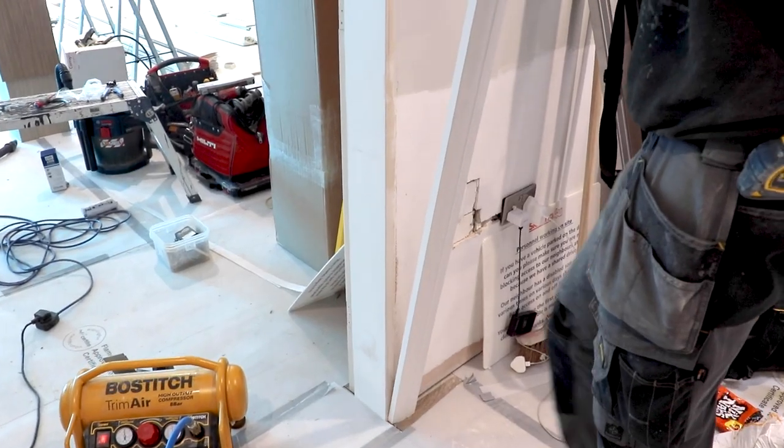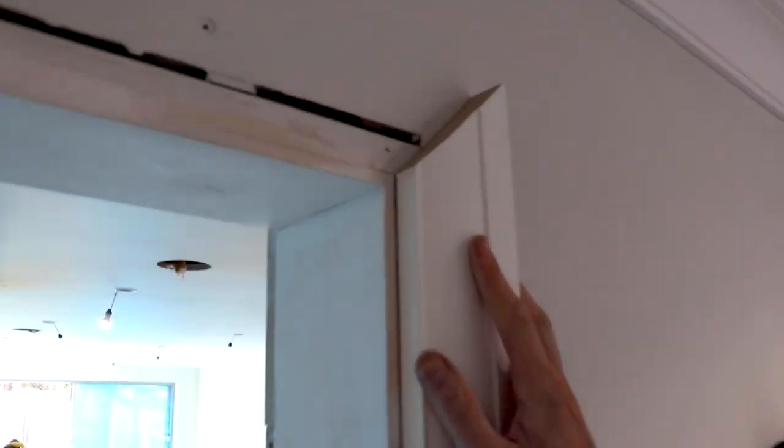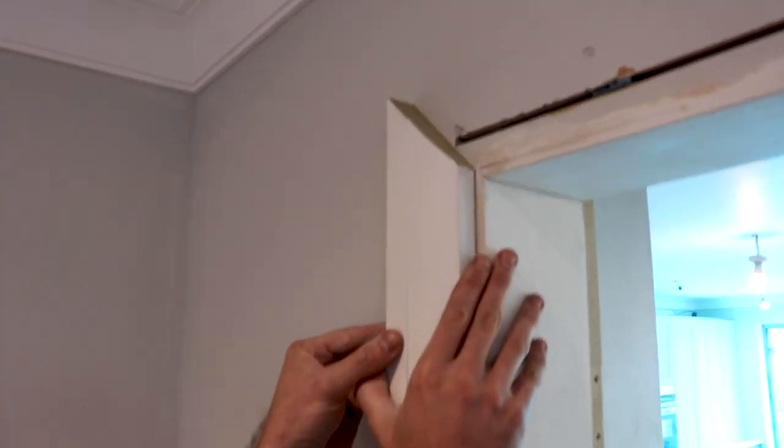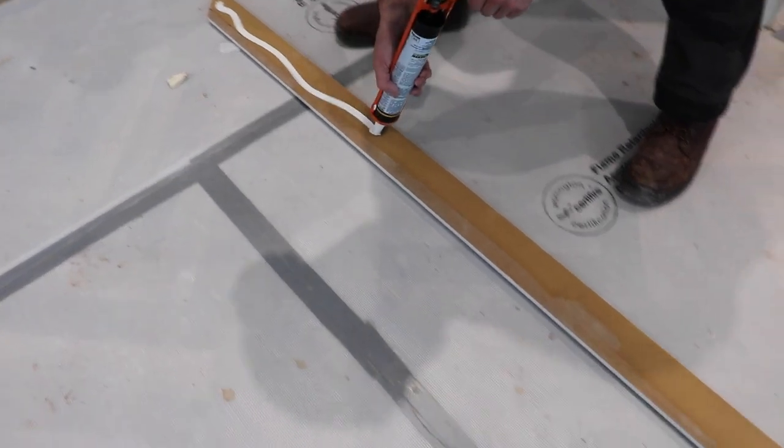Once you've cut them double check them up against your pencil markings on your frame just to make sure that they fit. Now that all the architrave pieces are cut it's time to fit them all to the wall. We're going to fit our header piece first.